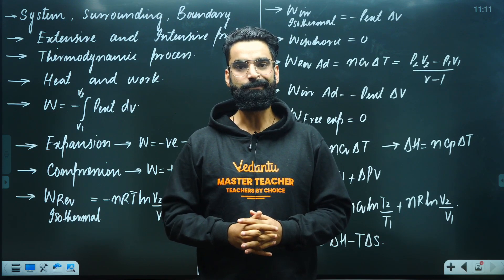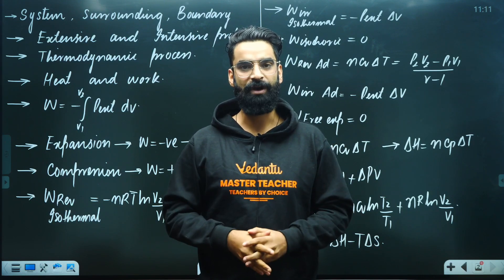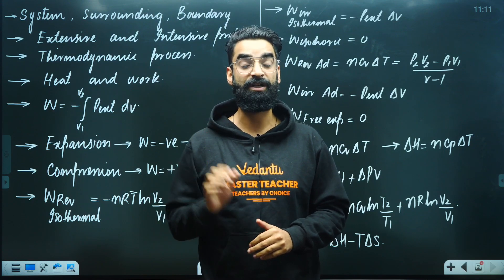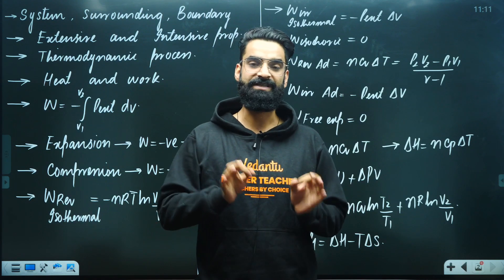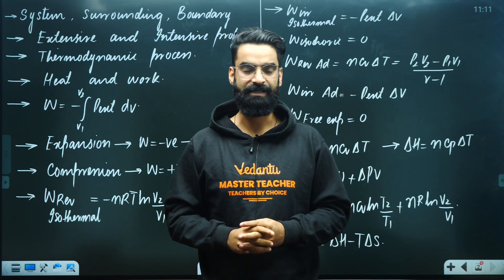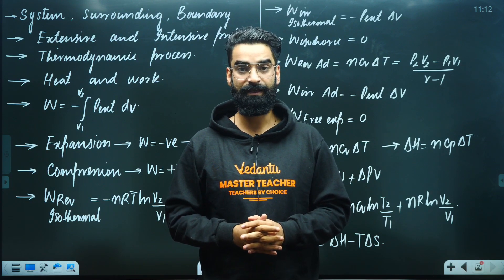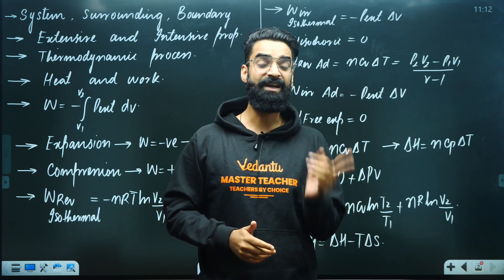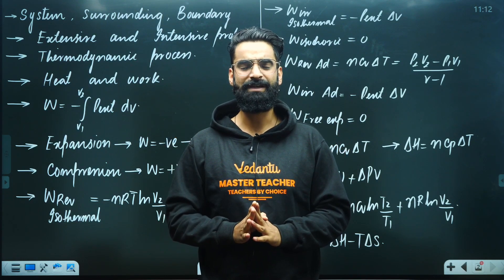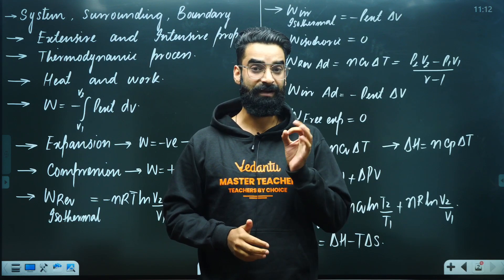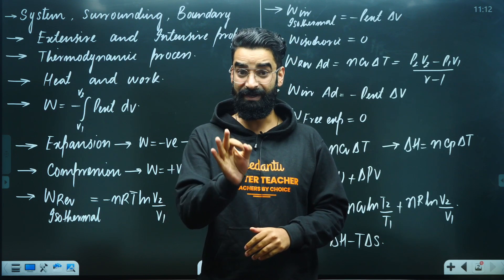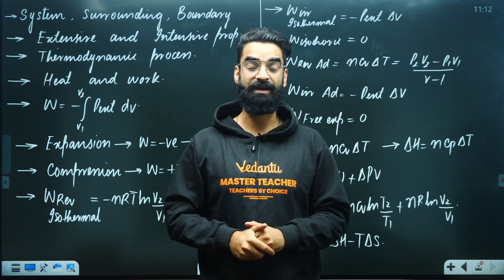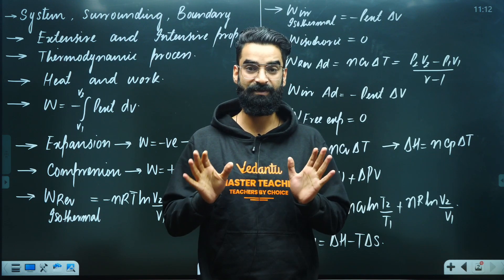After that we discussed polytropic processes. Any thermodynamic process that follows the equation PV^x = constant is called a polytropic process, where x ≠ 0, x ≠ 1, x ≠ γ, and x ≠ ∞. Excluding these values of x, for any other value of x, the gas is said to be following a polytropic process. For a reversible isothermal process, W = −nRT ln(V2/V1). For an irreversible isothermal process, W = −P_external ΔV. For a reversible adiabatic process, W = (P2V2 − P1V1)/(γ − 1). For an irreversible adiabatic process, W = −P_external ΔV.